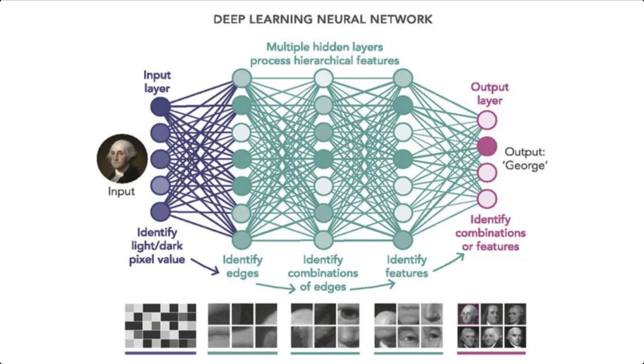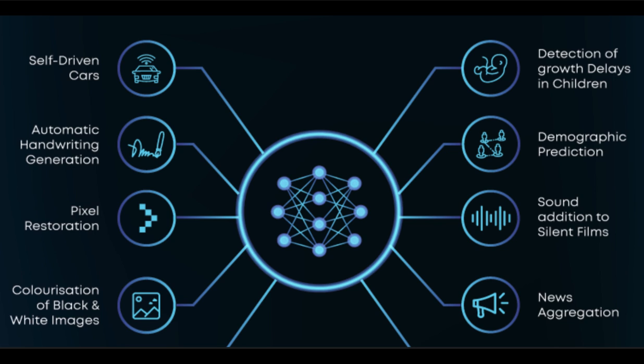When Facebook recognizes your friend in a picture, or Netflix recommends movies you might like, it's deep learning working behind the scenes. From news aggregation and fake news detection to self-driving cars, natural language processing, visual recognition, and virtual assistants — deep learning-based applications are now deployed in many areas. Deep learning breakthroughs are driving the current AI boom.